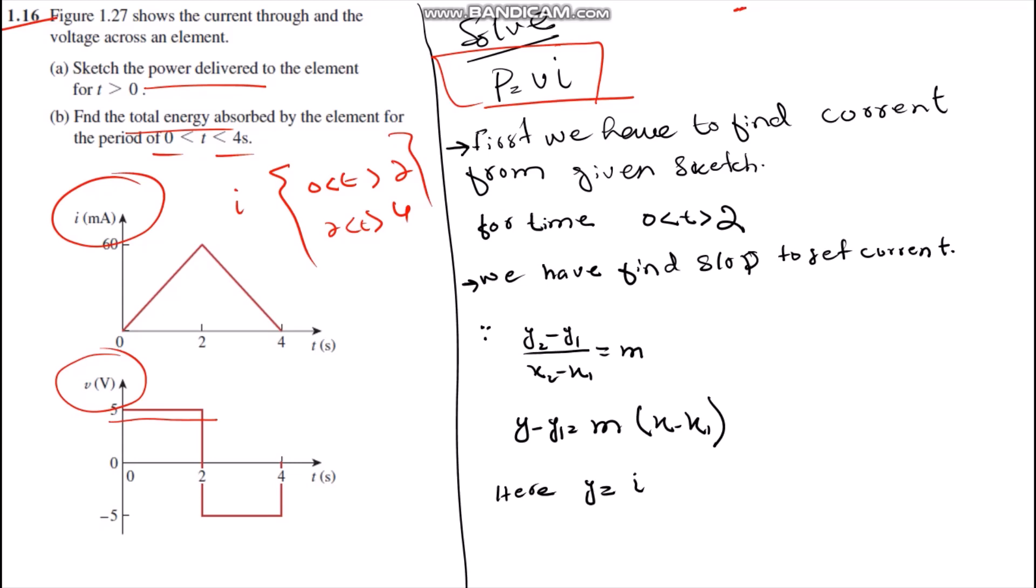We will simply put the values in the equation P equals VI, and we will get the power between 0 to 2 seconds and from 2 to 4 seconds.